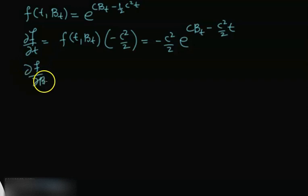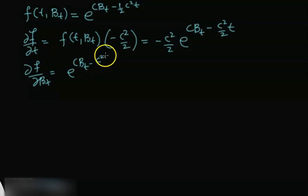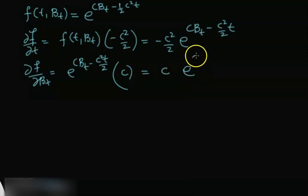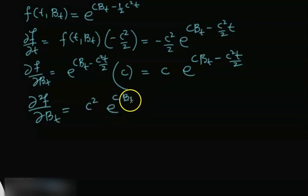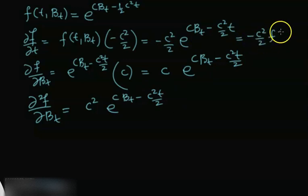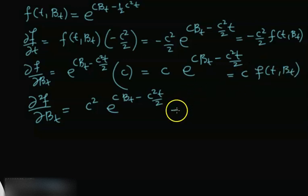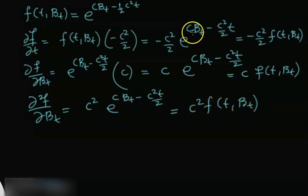Now we calculate the first partial derivative with respect to Brownian motion, which is c · e^(c·B_t − c²t/2), that is c times f. The second partial derivative of the same function with respect to Brownian is c² · e^(c·B_t − c²t/2), which equals c²·f. So we have: ∂f/∂t = −c²/2 · f, ∂f/∂B = c·f, and ∂²f/∂B² = c²·f.